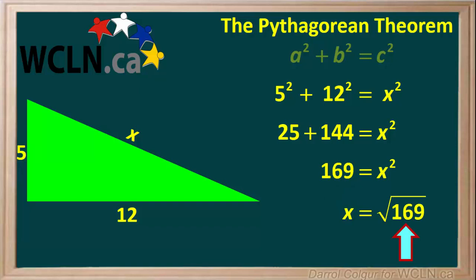Taking the square root of both sides and putting x on the left, we get x is equal to the square root of 169. Using a calculator or another method, we can determine that the square root of 169 is equal to 13.